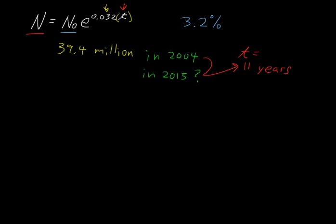So let's put all that in there. We get some population or some number equals 39.4 times e to the 0.032 times 11, because t is 11 years.